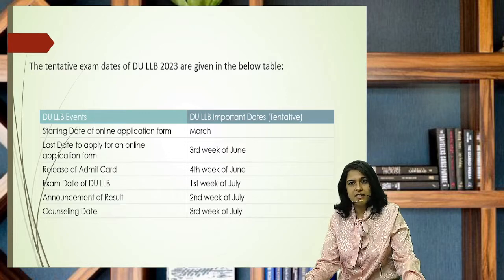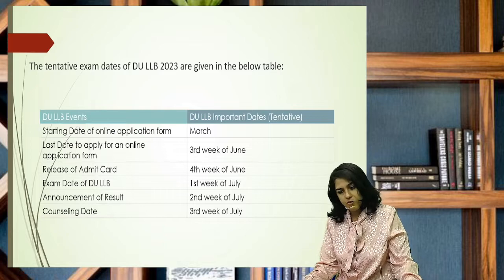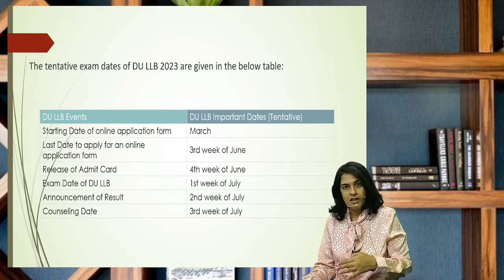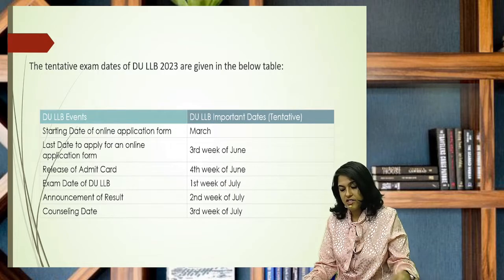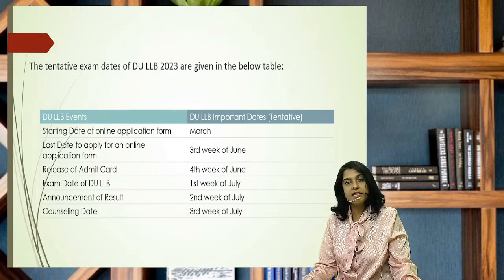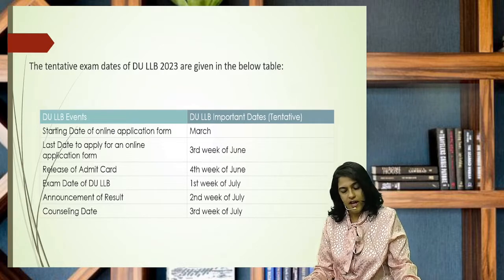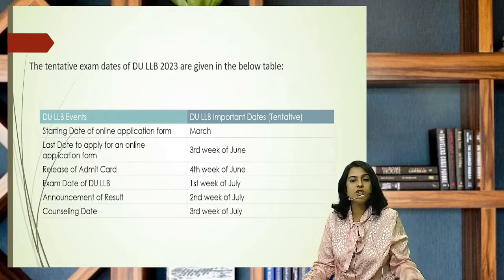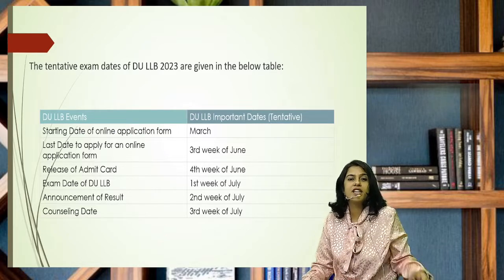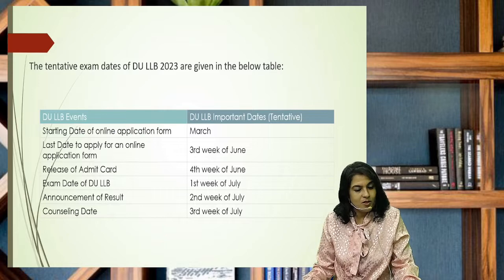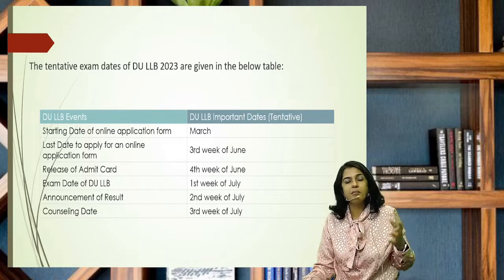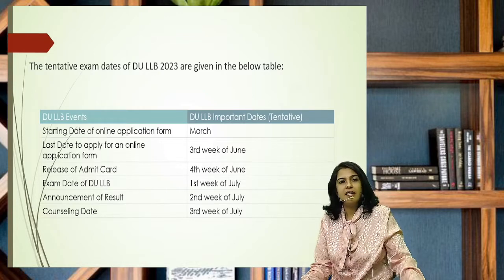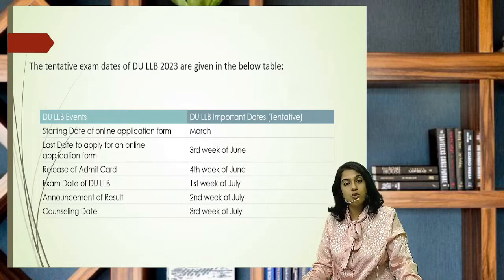Now, exam dates - this is our tentative schedule. In March their forms will come. Third week of June will be the last date to apply for the entrance test. Fourth week of June they'll release the admit card. First week of July would be your entrance test. Second week of July they'll release the results and third week of July those who get admission will have their counseling. So their schedule is a bit later compared to other law entrance tests, going into July.